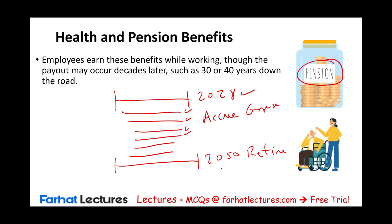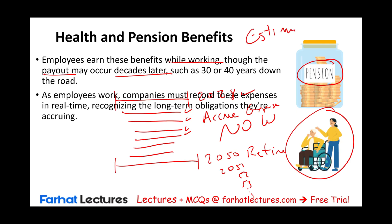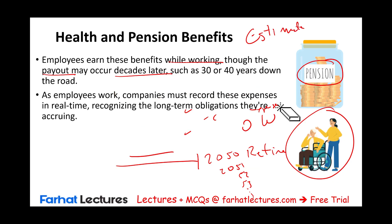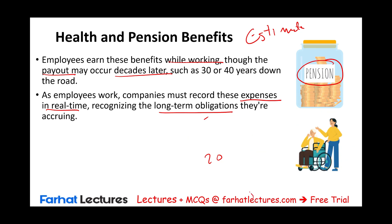If they offer you health insurance, same concept. The employee earns these benefits while working, though the payout may occur decades later. So how do we record this liability and expense? We estimate. As employees work, companies must record these expenses now, in real time, recognizing a long-term obligation they are accruing. In accounting, we have an area called pension liability — it's a very complicated area, but that's the basic idea.